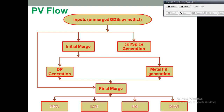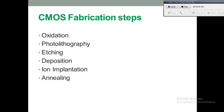Let's move on to the layout of the CMOS for basic knowledge of fabrication. We are all familiar with the CMOS fabrication steps, which are: oxidation, photolithography, etching, deposition, ion implantation, and annealing.